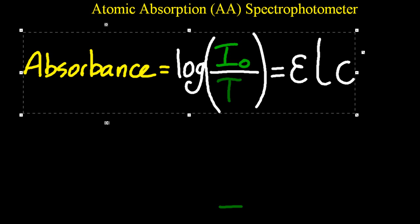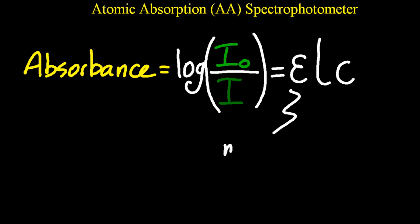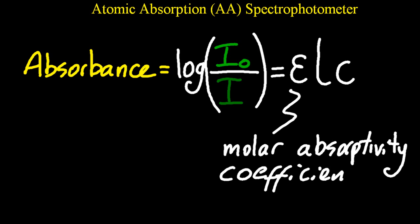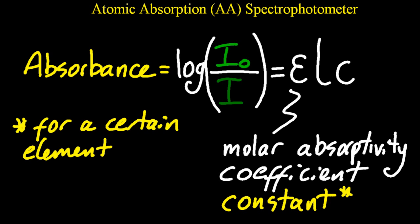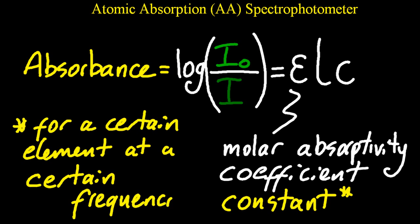And E, well, that, confusingly, is the molar absorptivity coefficient. So hopefully they'll just give you that, or they'll give you the other numbers, and you can work it out. It is, of course, a constant. Nothing's ever that simple either, is it? It's a constant for a certain chemical, a certain element, at a certain frequency. So it's only a constant as long as you don't change the element or the frequency of light.